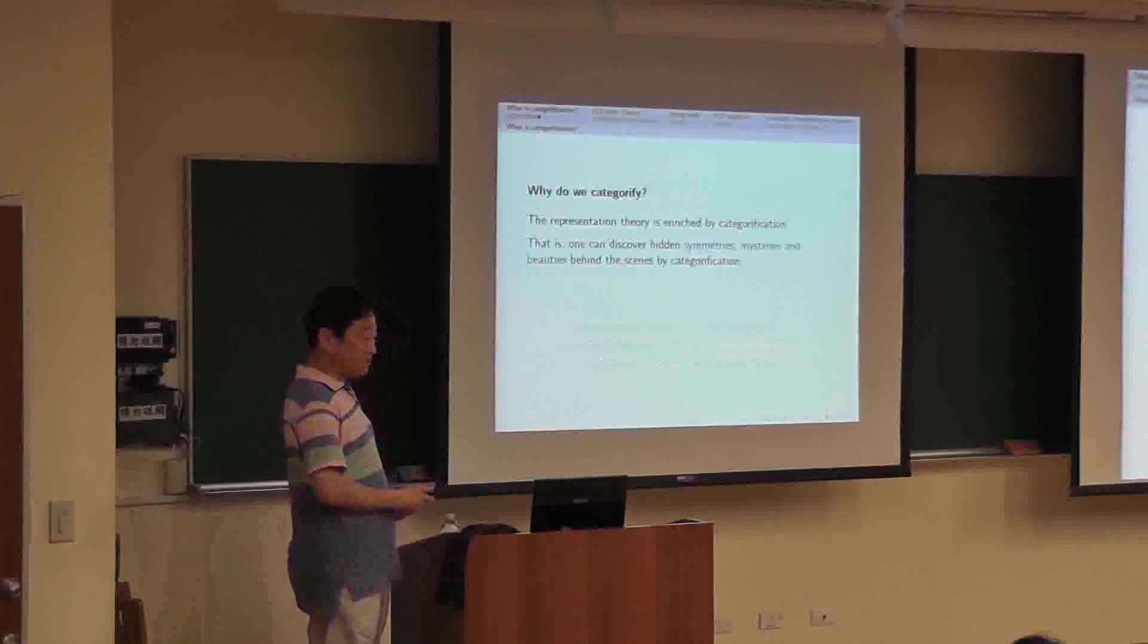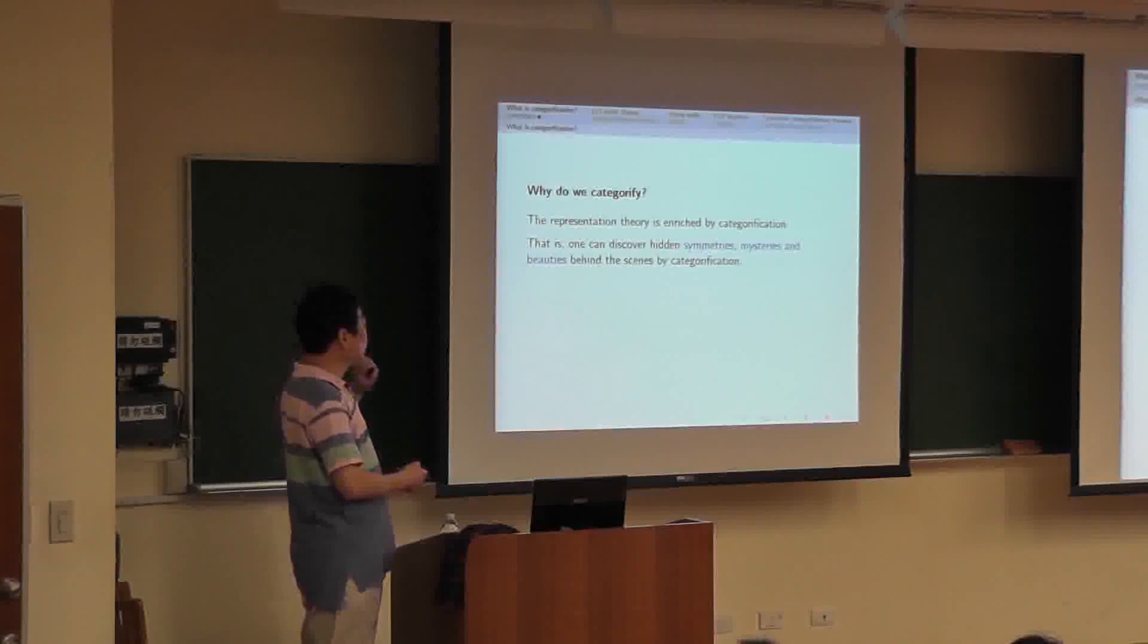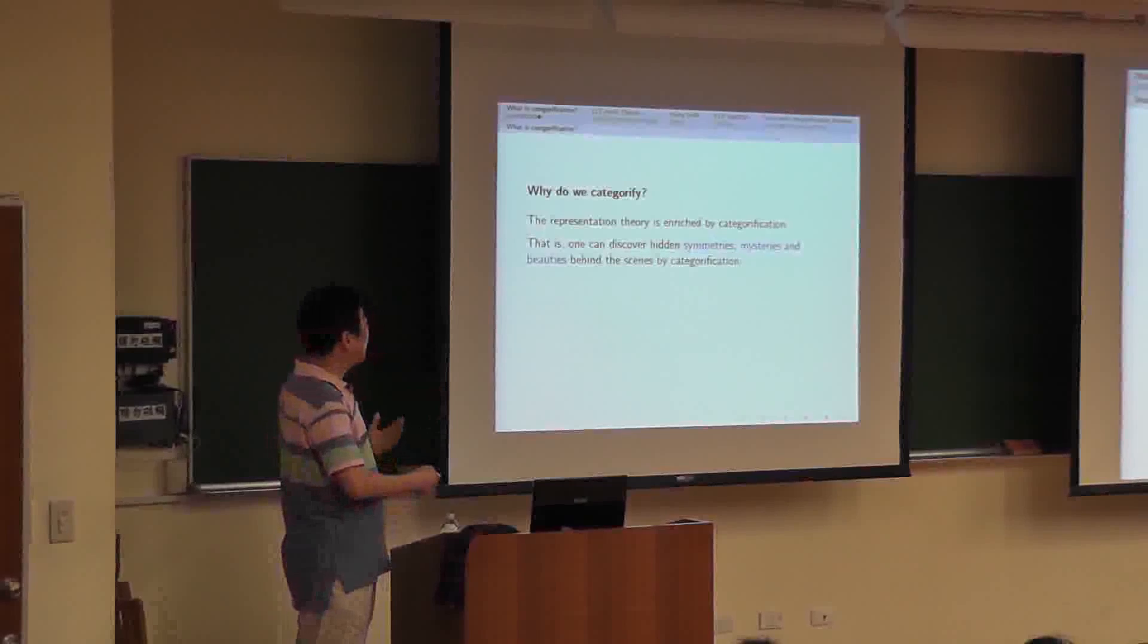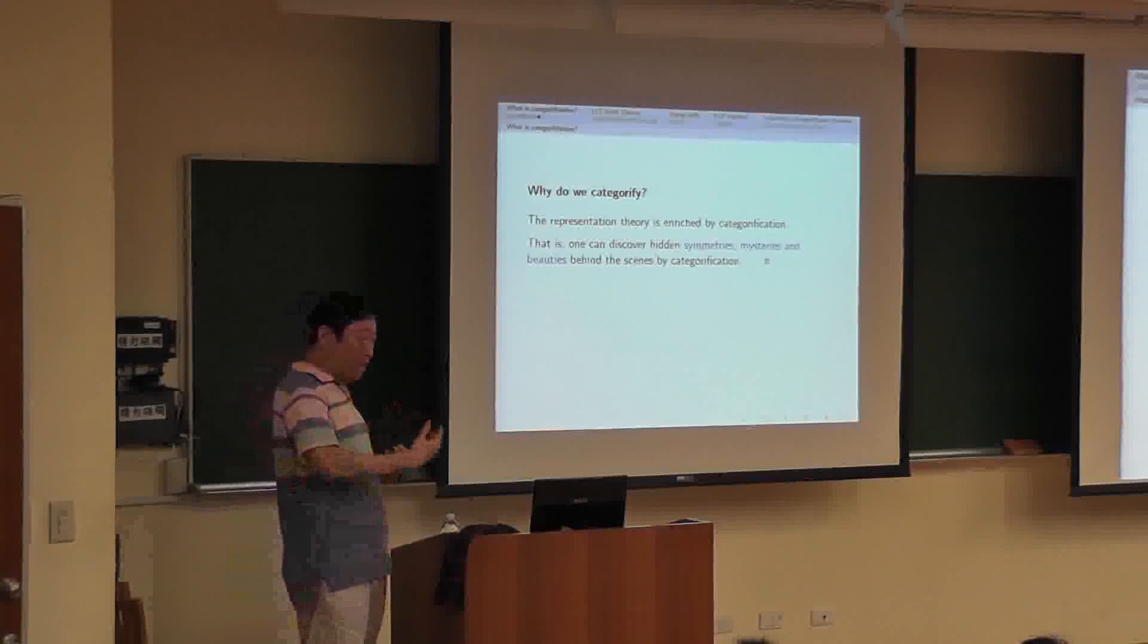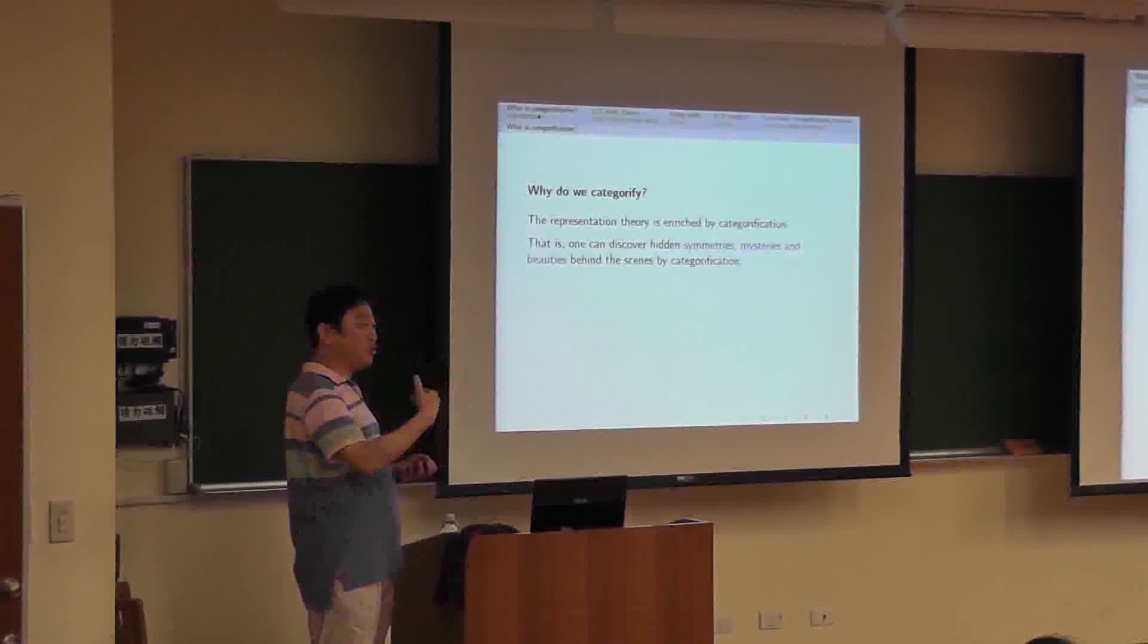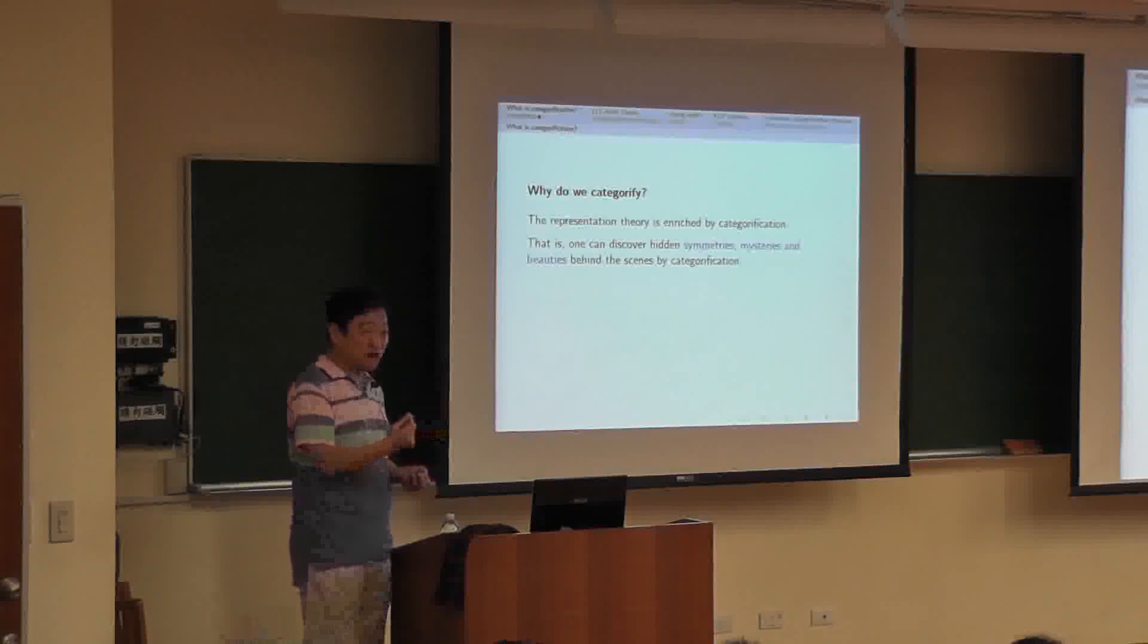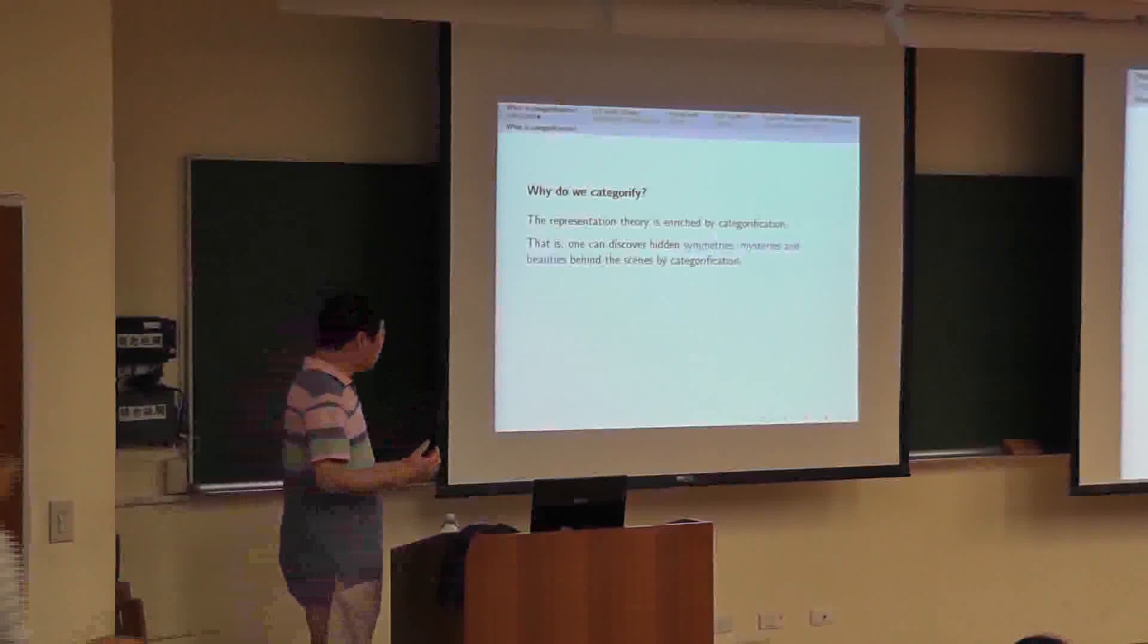Now, then why do we categorify? There are many answers, but one answer can be the representation theory is enriched by categorification. That is, we can discover hidden symmetries, mysteries, and beauties behind the scenes by categorification. By doing categorification, I think we should be able to solve unsolved problems which cannot be solved before. Right? If we categorify anything, then maybe there is no reason to categorize. There is no reason to generalize. But still, if you solve the unsolved problems, then we will face new challenges which can be more interesting.